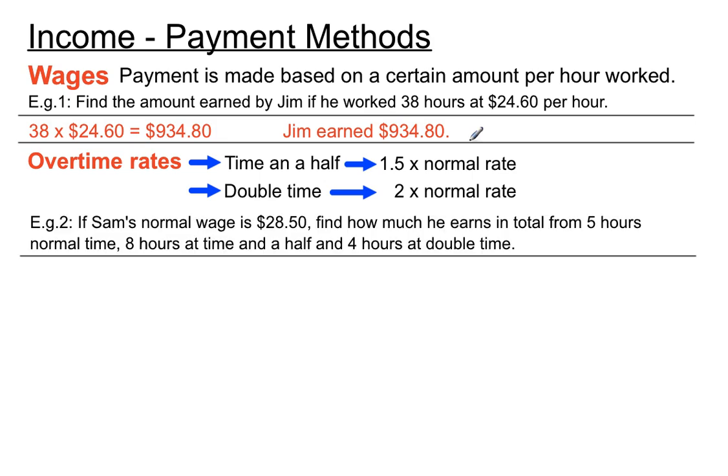Let's have a look at an example of that sort of calculation. If Sam's normal wage is $28.50, that's just normal hours. Find out how much he earns all together in total from five hours of normal time, eight hours at time and a half and four hours at double time. So we have to make sort of three separate calculations there and then add it all up at the end. Let's have a look how we do it.